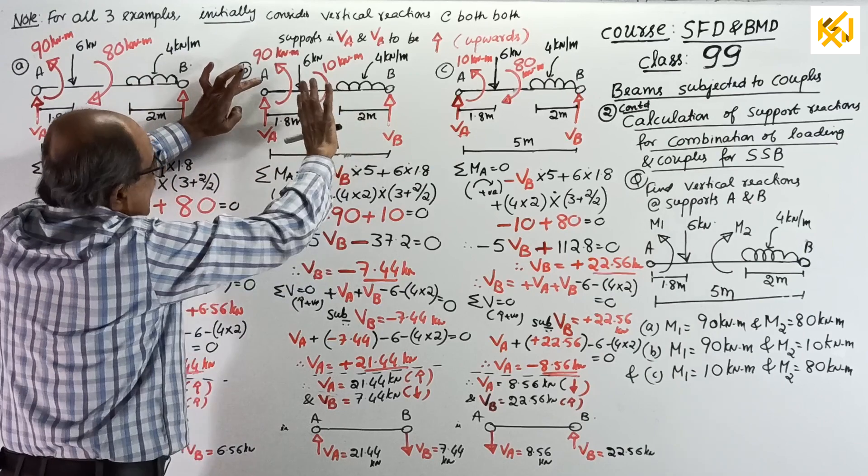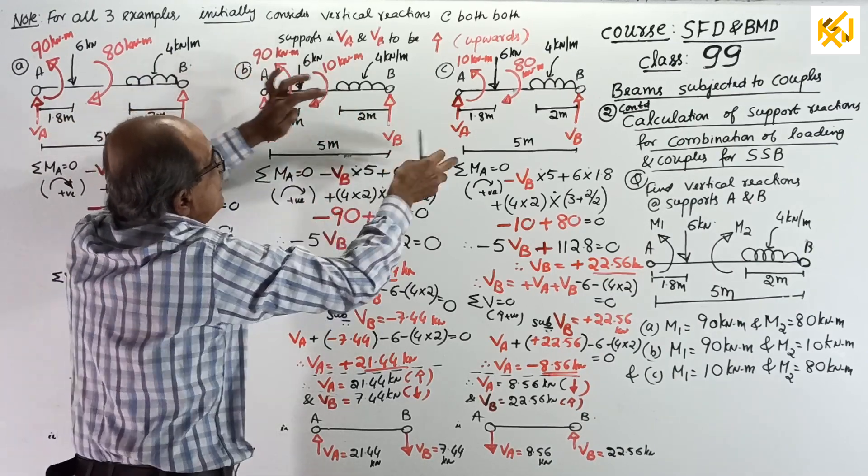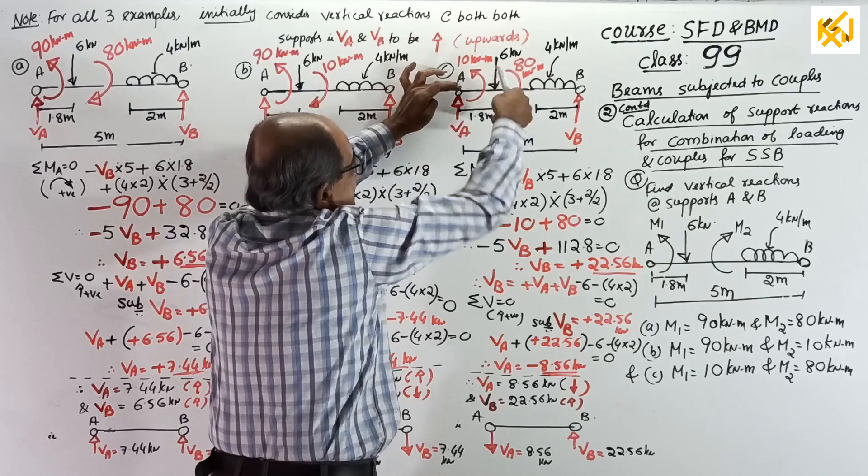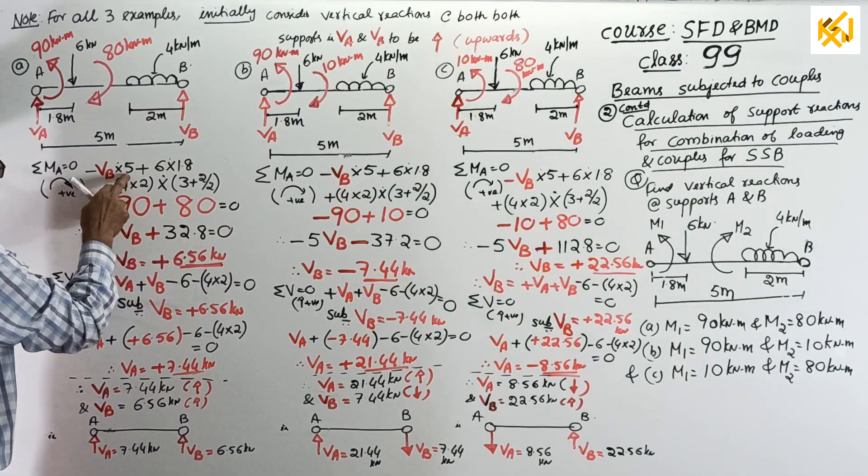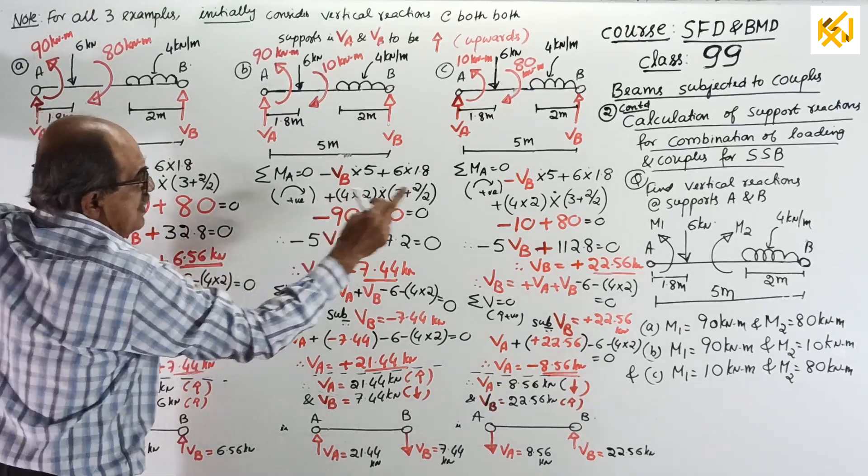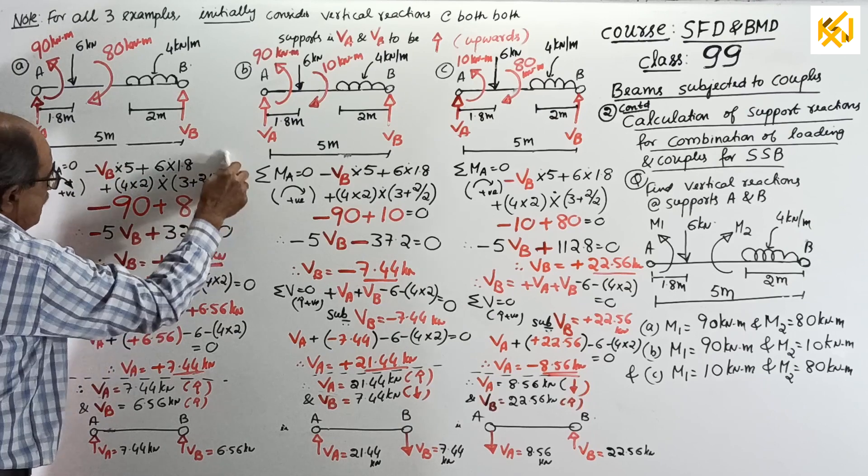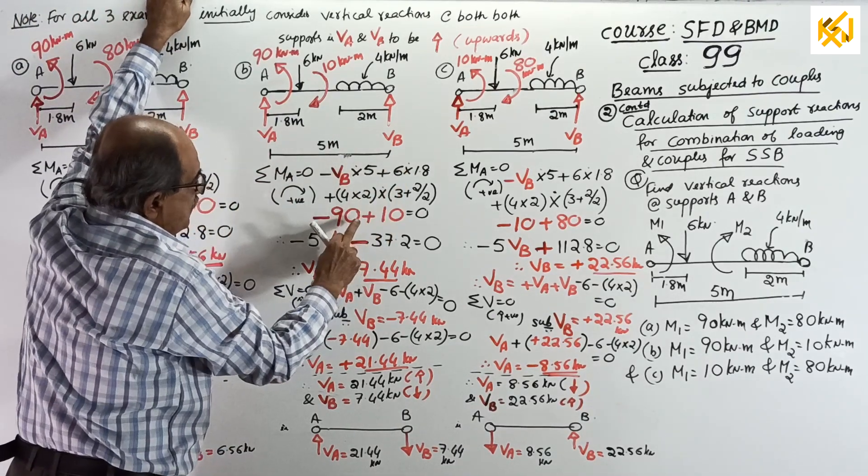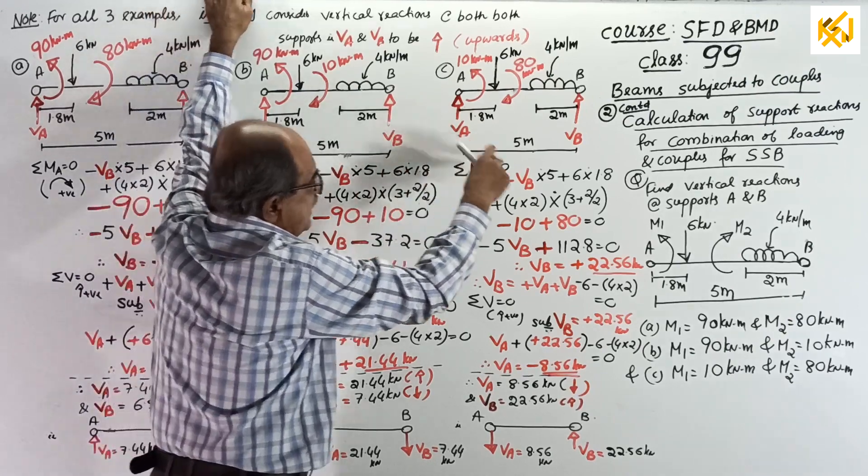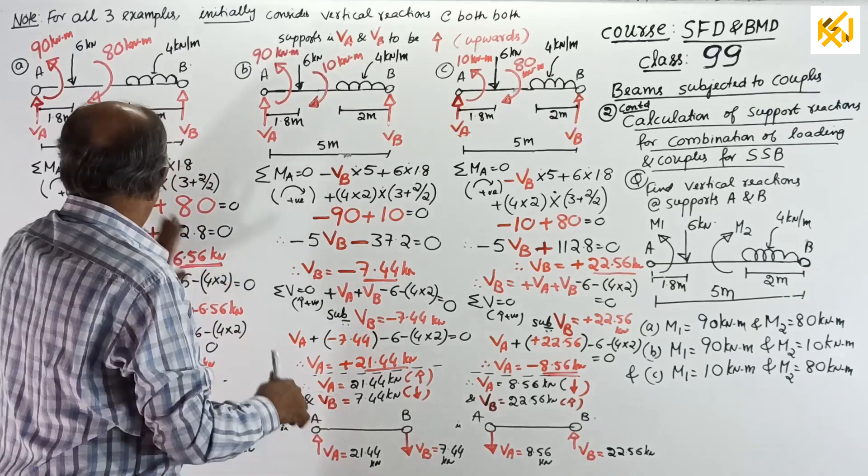Here, this question. Same as that one. Then, minus 90, plus 10. Here, minus 10, plus 80. Now, see here. Simplify. Everywhere, you get minus 5VB, minus 5VB, minus 5VB. You do the net calculation here. It will come plus 32.8. Here, the net will come minus 37.2. Here, the net will come plus 112.8. You calculate.